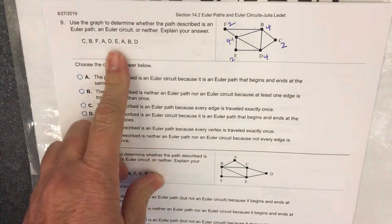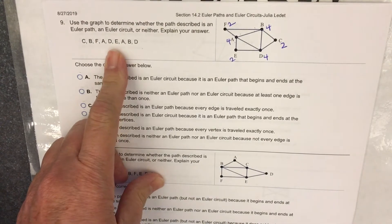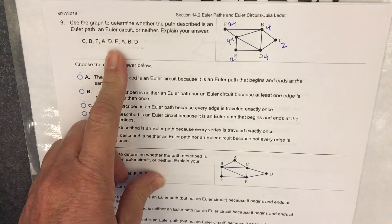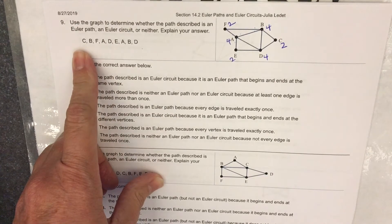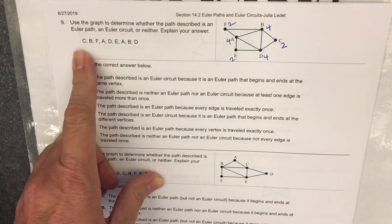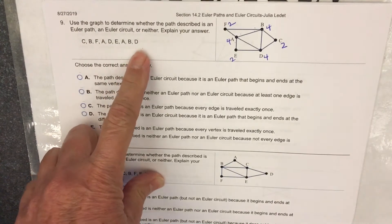Well, I know it's not a circuit. I don't even have to trace through it. How do I know it's not a circuit? It started with C. It would have to end with C. And it doesn't.